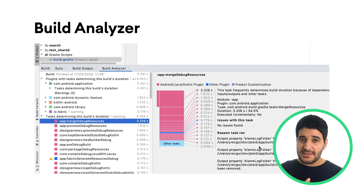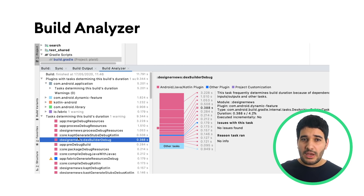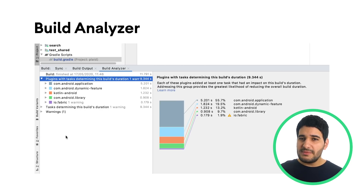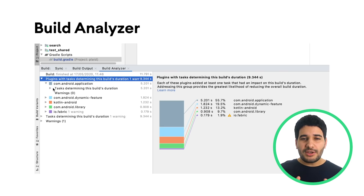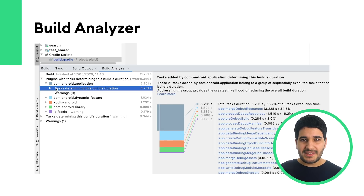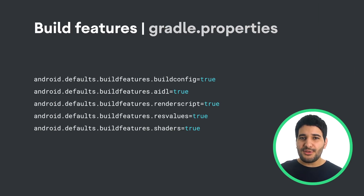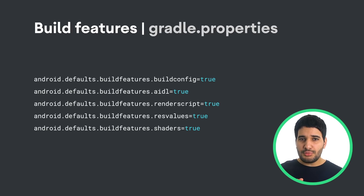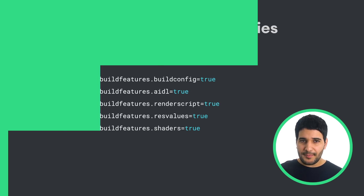It helps you understand and diagnose issues with your build process, such as disabled optimizations and improperly configured tasks. You can also specify the default settings for these features across all modules in a project by including one or more of the following in your project's Gradle properties file.